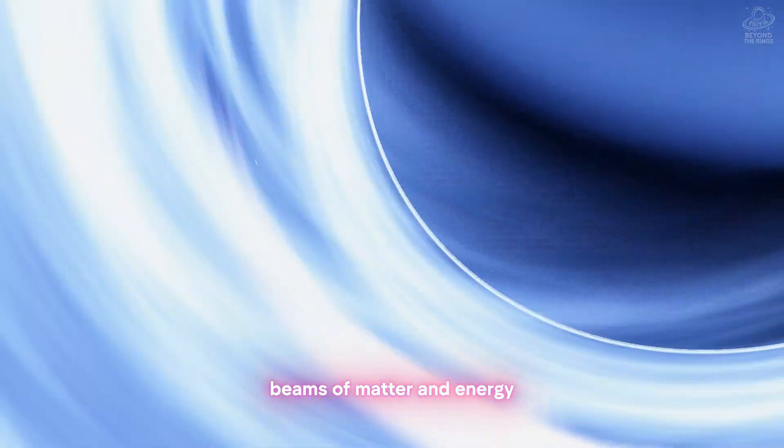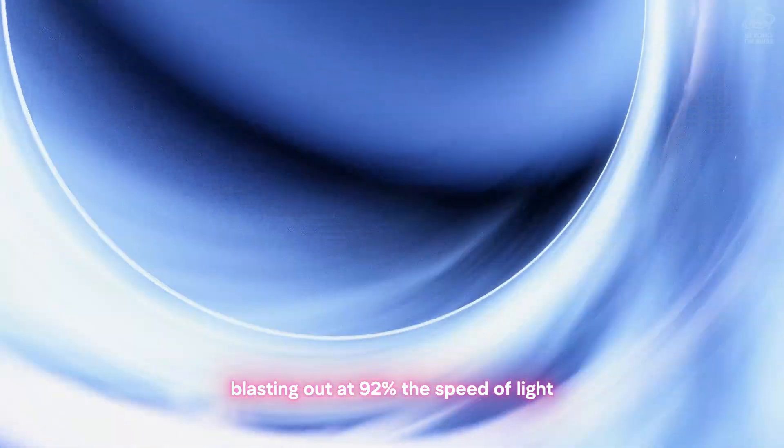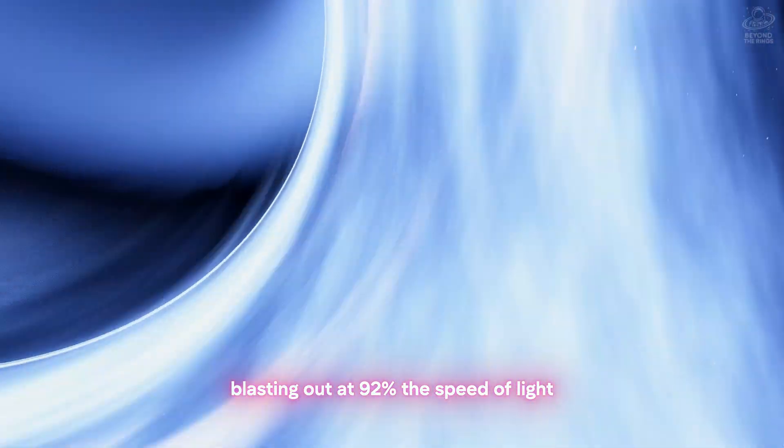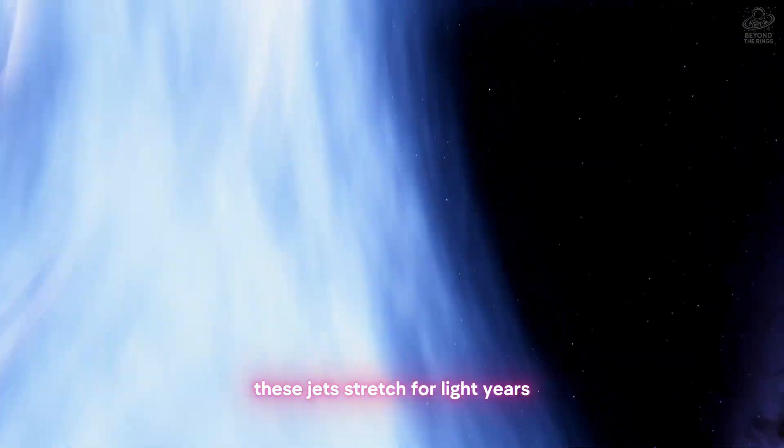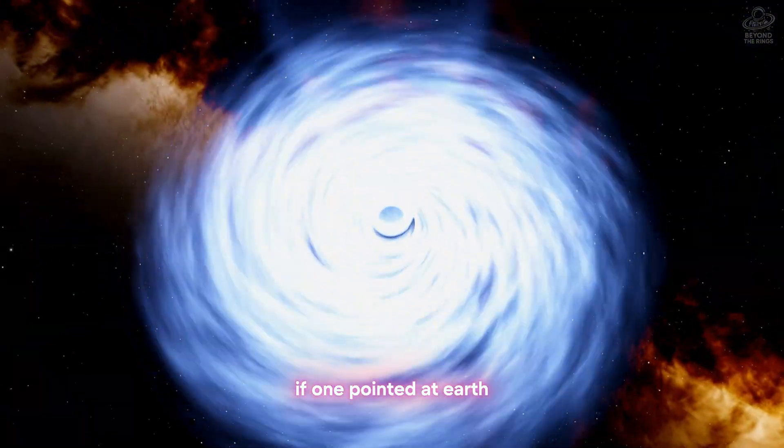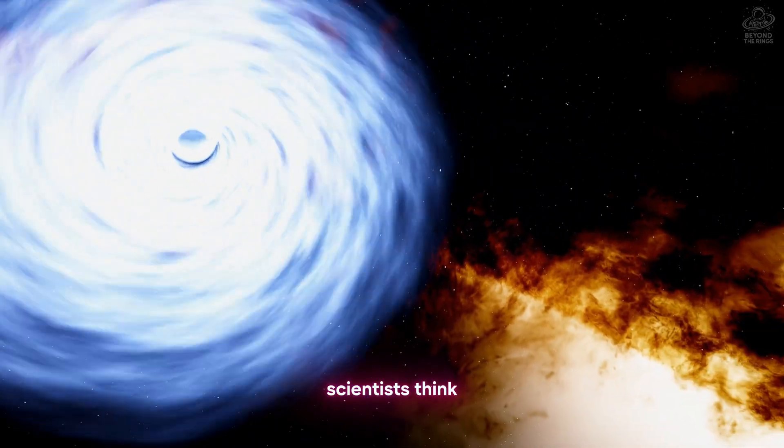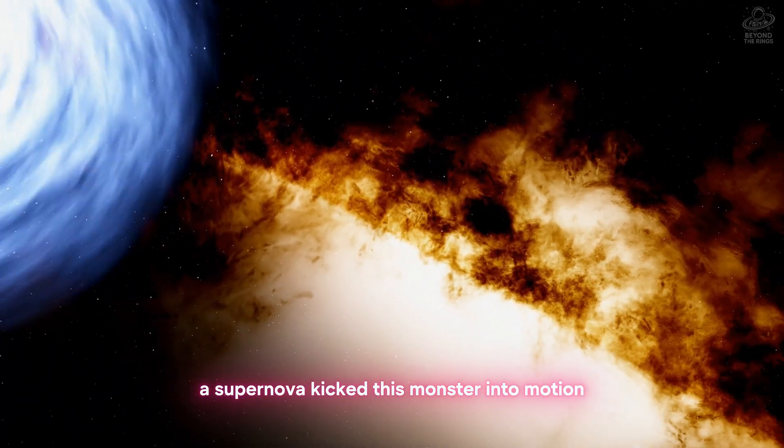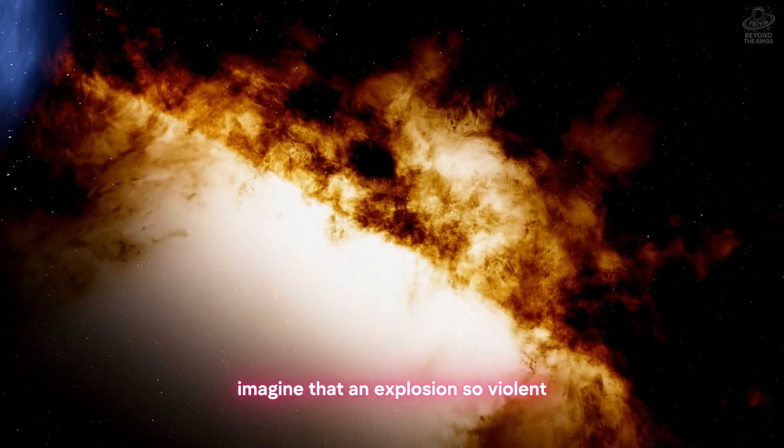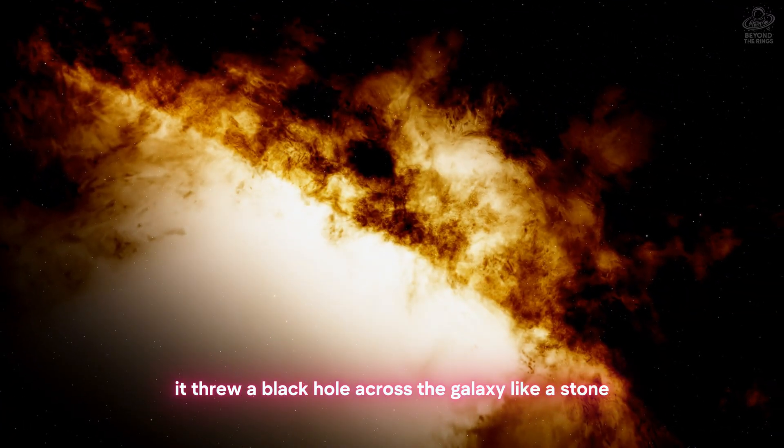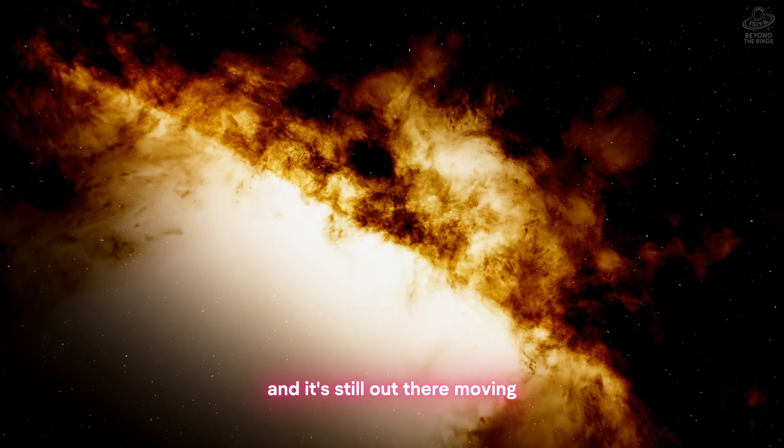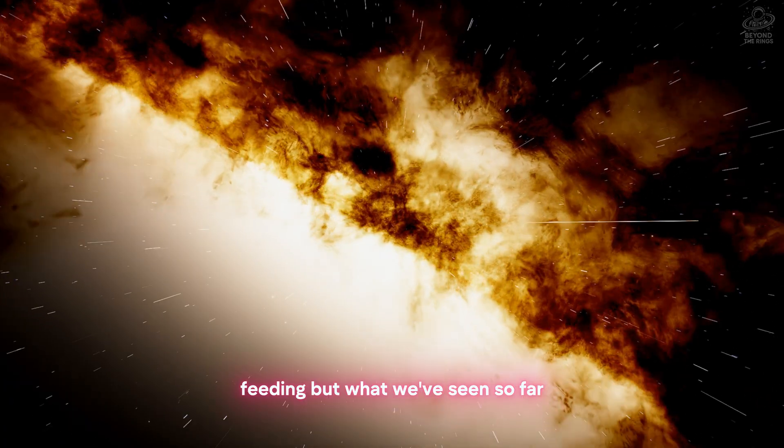This black hole is shooting jets. Beams of matter and energy, blasting out at 92% the speed of light. These jets stretch for light years. If one pointed at Earth, it would sterilize our entire planet in seconds. Scientists think a supernova kicked this monster into motion. Imagine that. An explosion so violent it threw a black hole across the galaxy like a stone. And it's still out there. Moving. Feeding.